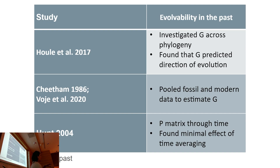Time averaging: imagine you have a chunk of rock that might represent a thousand years, hundreds of populations. You can imagine if populations are shifting through that time, you're exploring some sort of space. So how much greater is that phenotypic variation than the modern?